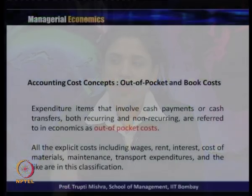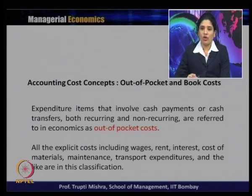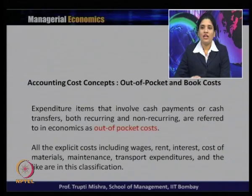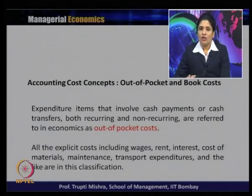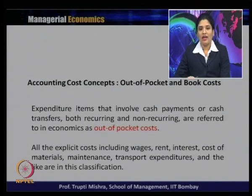The fourth category of cost under accounting purpose is out-of-pocket and book cost. Expenditure items that involve cash payment or cash transfer — both recurring and non-recurring — are referred to in economics as out-of-pocket cost. All explicit costs including wages, rent, interest, cost of material, maintenance, transport expenditure and the like are in this classification.